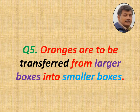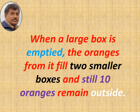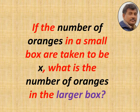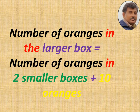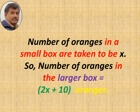Oranges are to be transferred from a large box to smaller boxes. When the largest box is emptied, the oranges fill two smaller boxes and still 10 oranges remain. Let the number of oranges in a small box be x. Therefore, the total number of oranges in the largest box equals two smaller boxes plus 10 remaining, which gives us 2x plus 10.